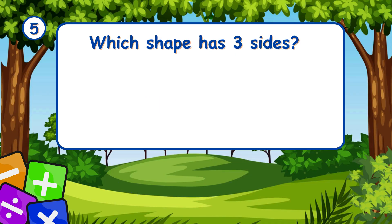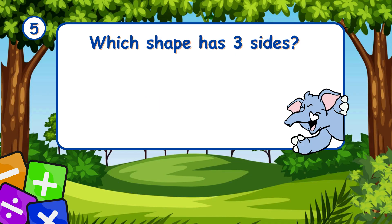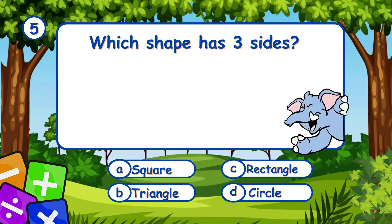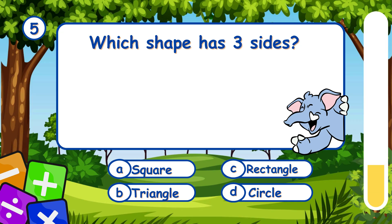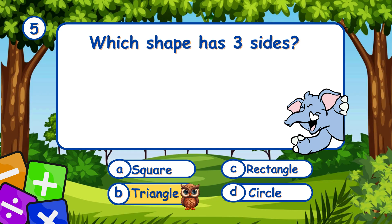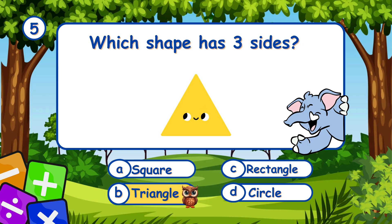Which shape has 3 sides? It's B, triangle. A triangle has 3 sides.